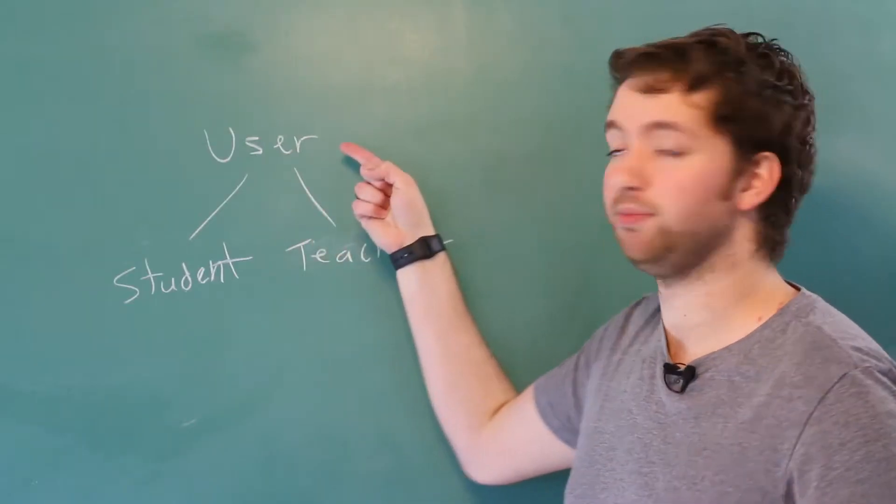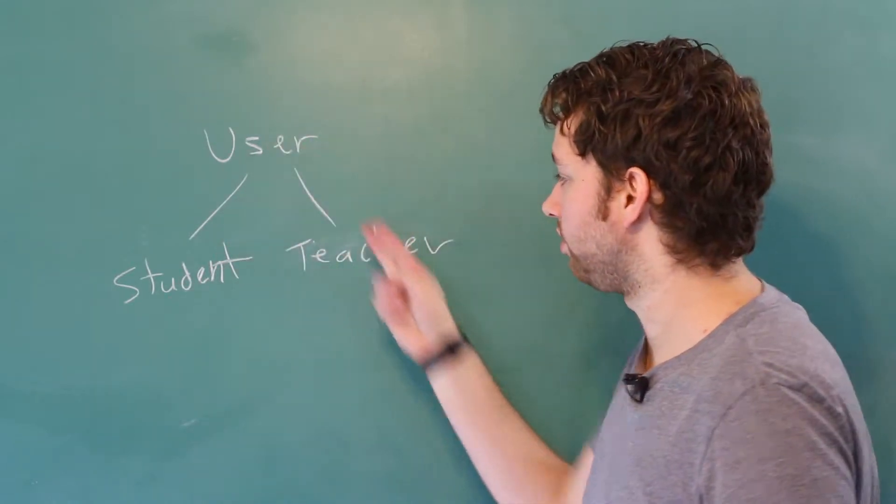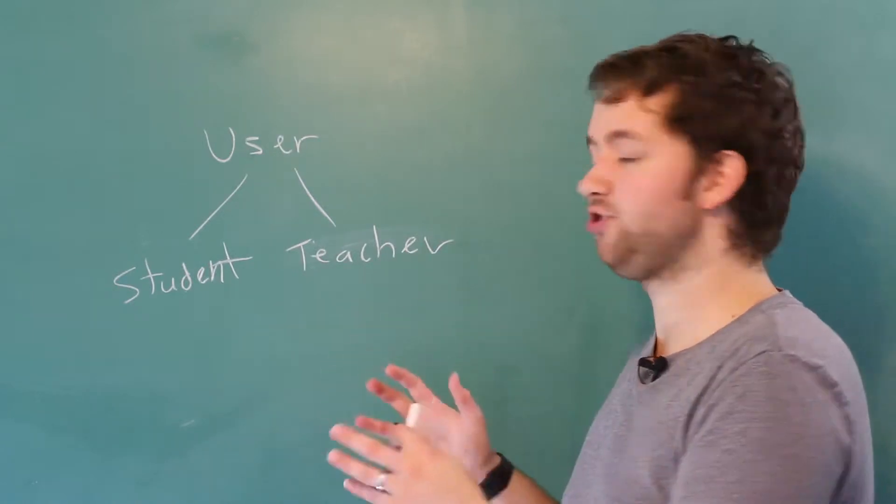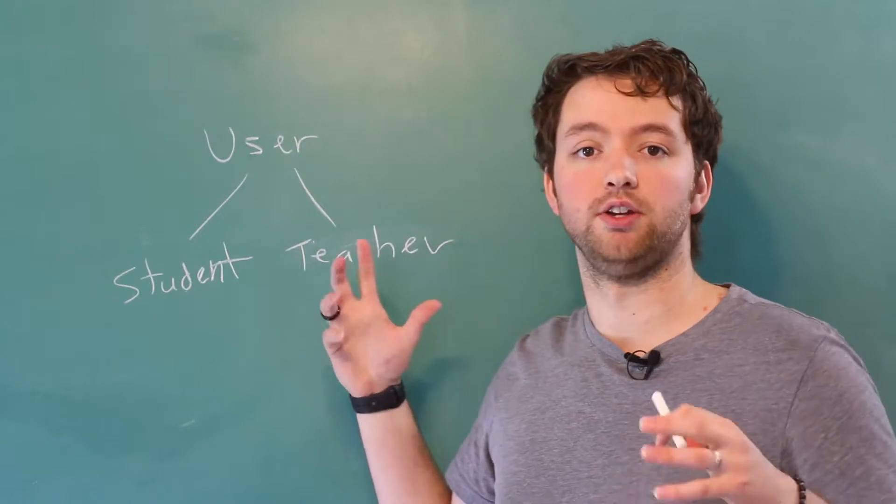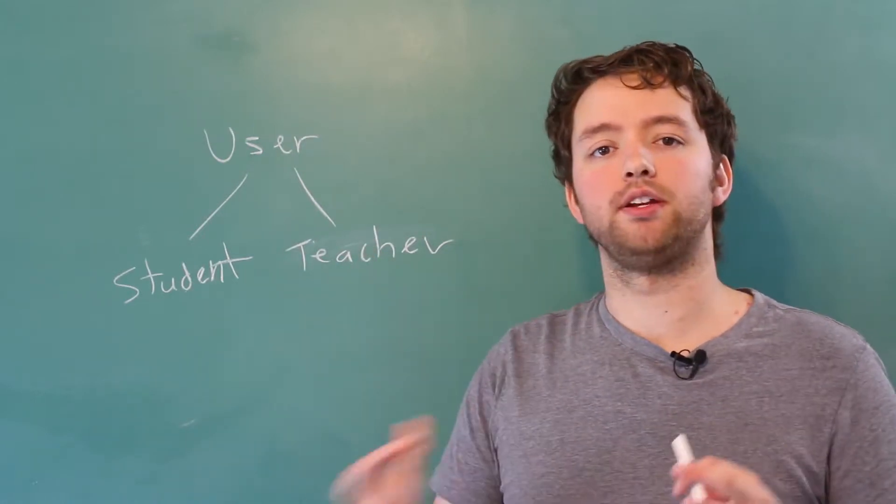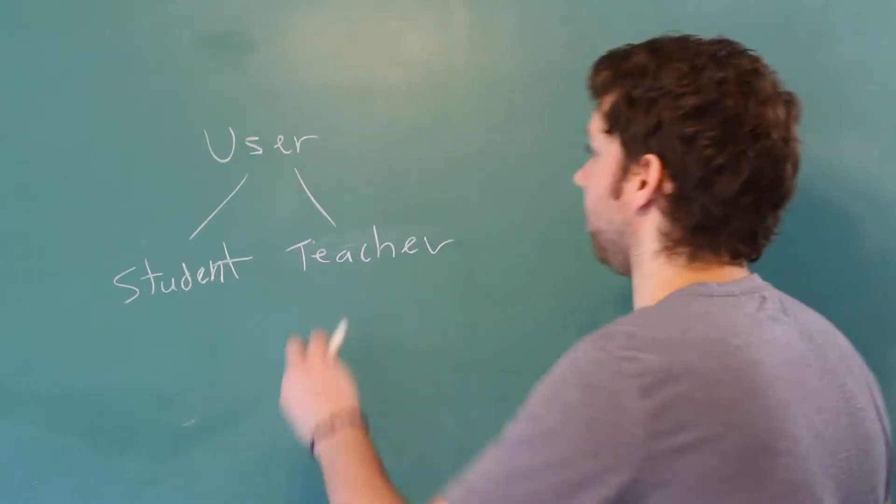Usually we're going to put common behavior up in the user class so that it can be inherited from these classes down here. But occasionally we're going to create our own implementation down in one of these derived classes. An example might be to say Hello—maybe that's a method we created up here.